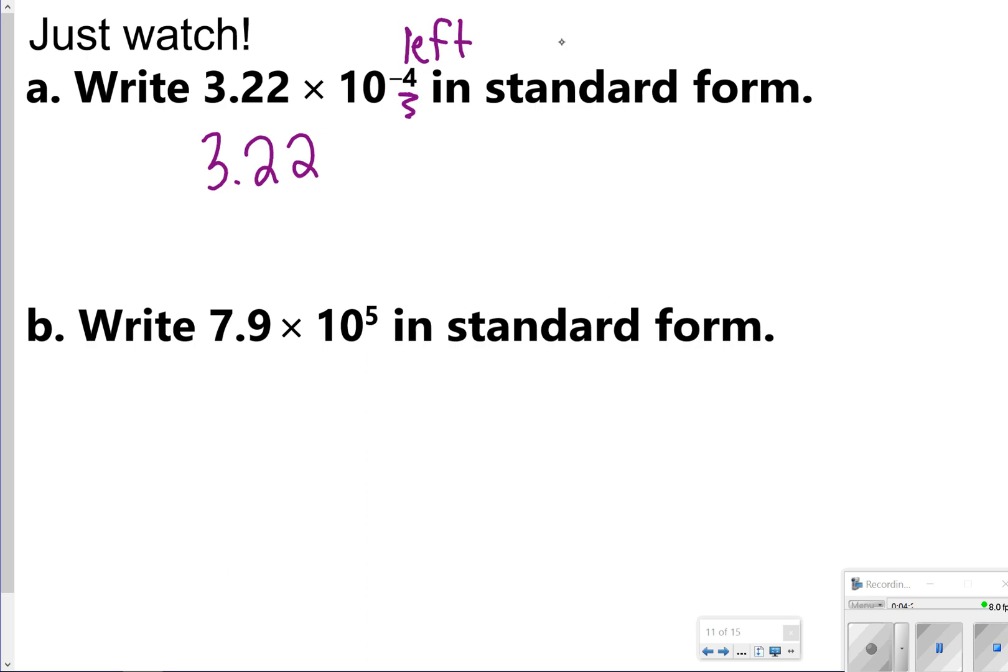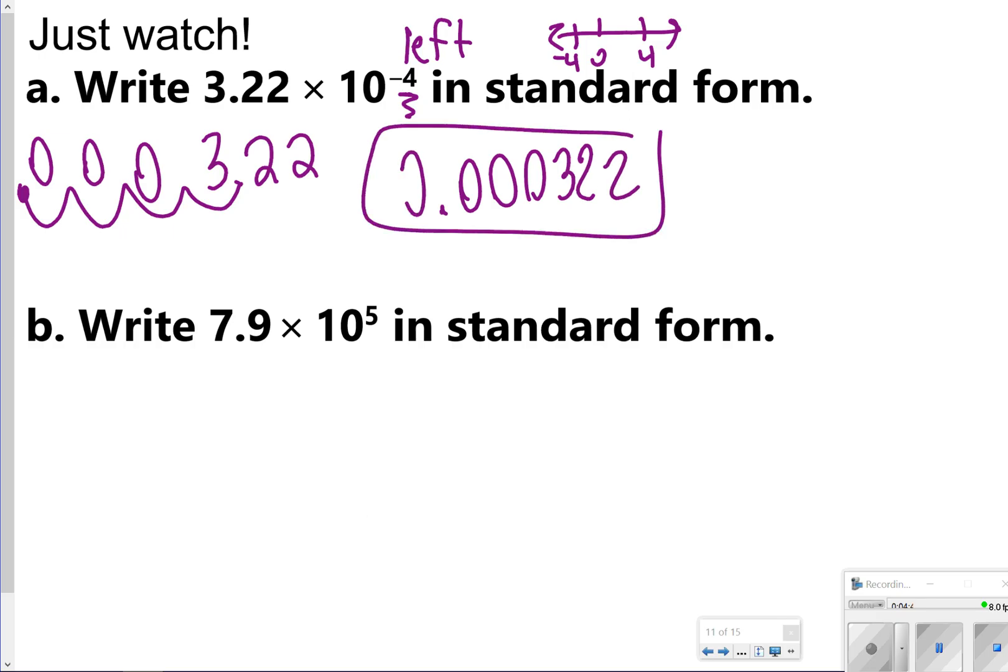Think about on a number line as well. You have a number line. Here's 0. All your negatives are on the left and your positives are on the right. So you're going to be moving in the negative direction. 1, 2, 3, and 4. So we're going to have 3 zeros. So 0.000322 is my answer.